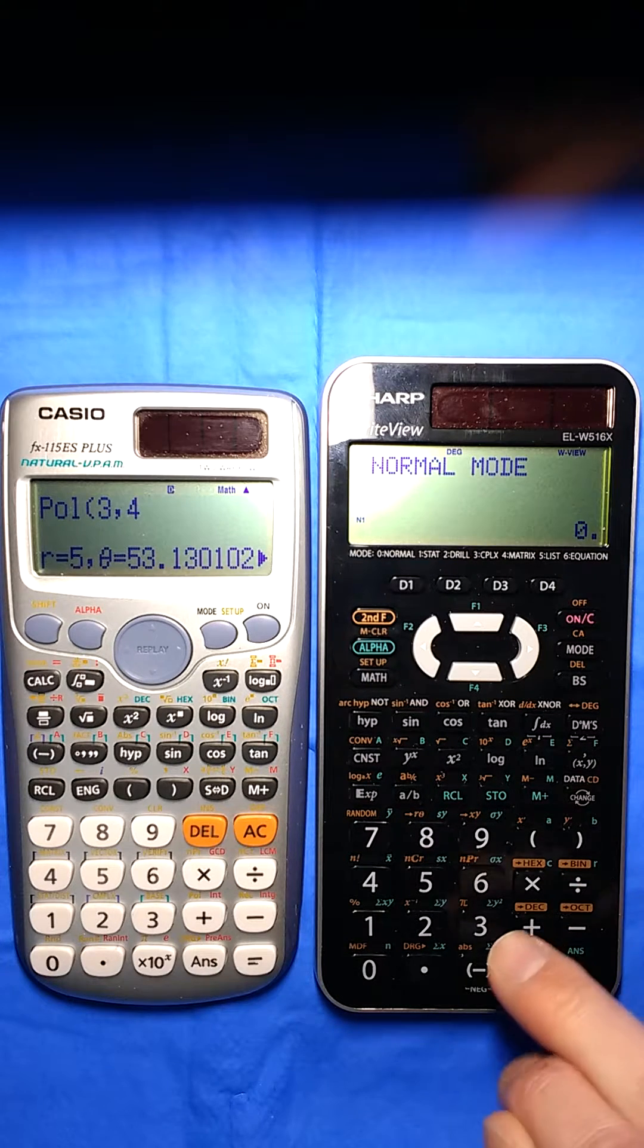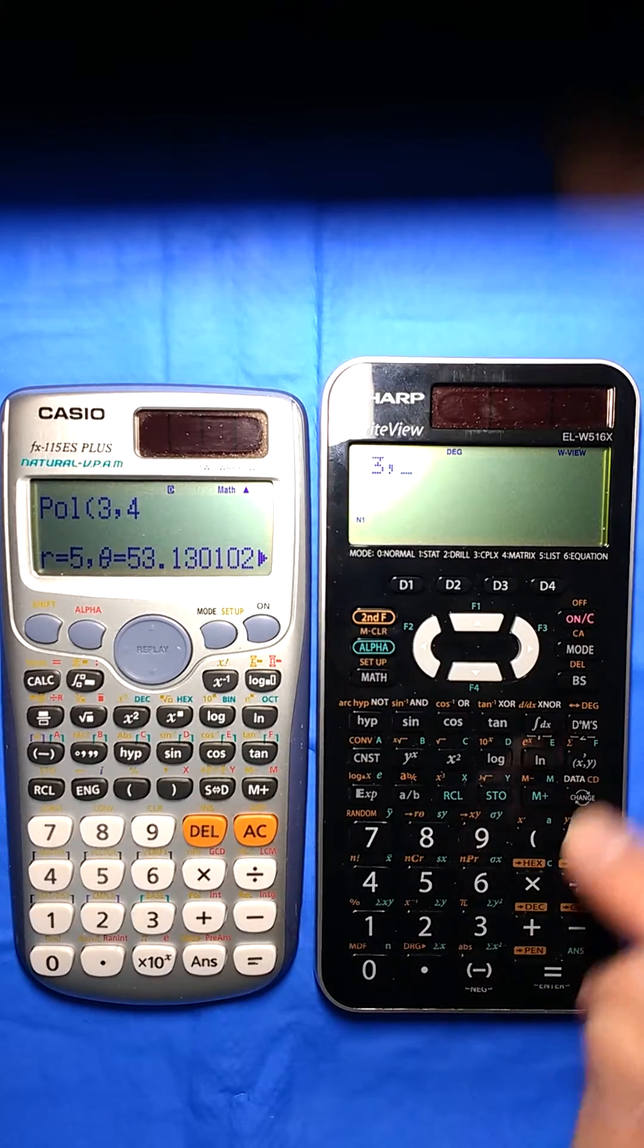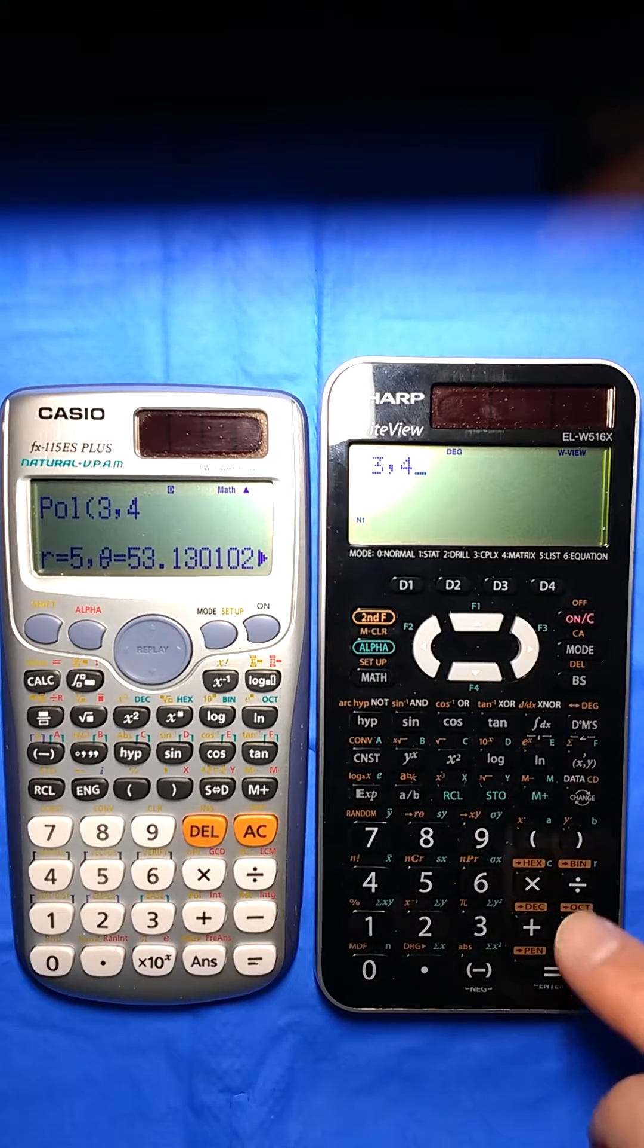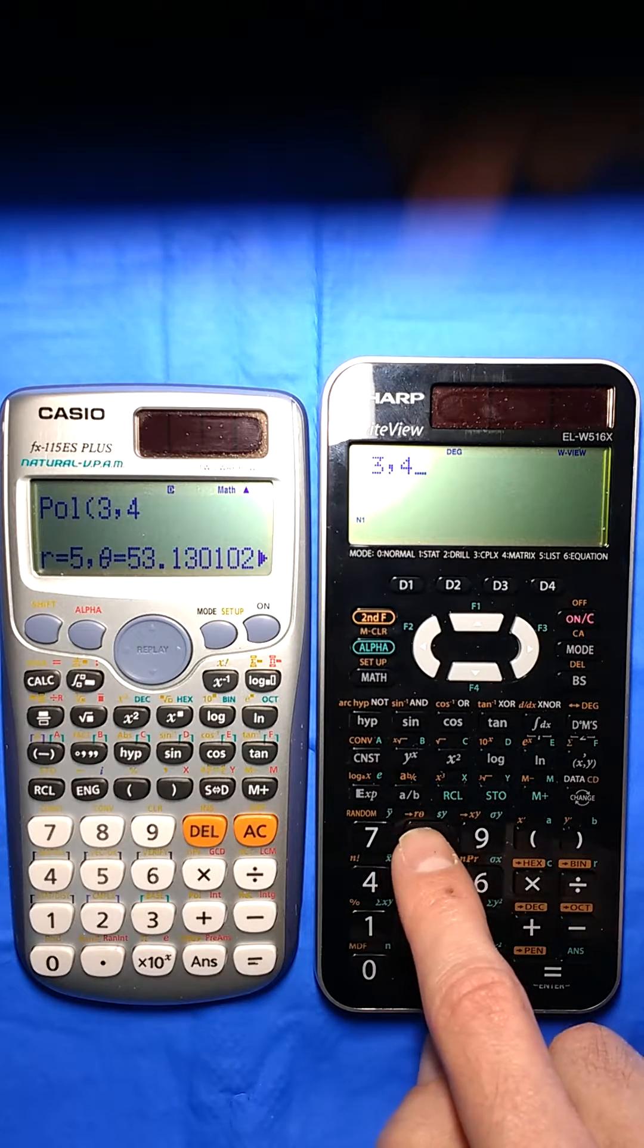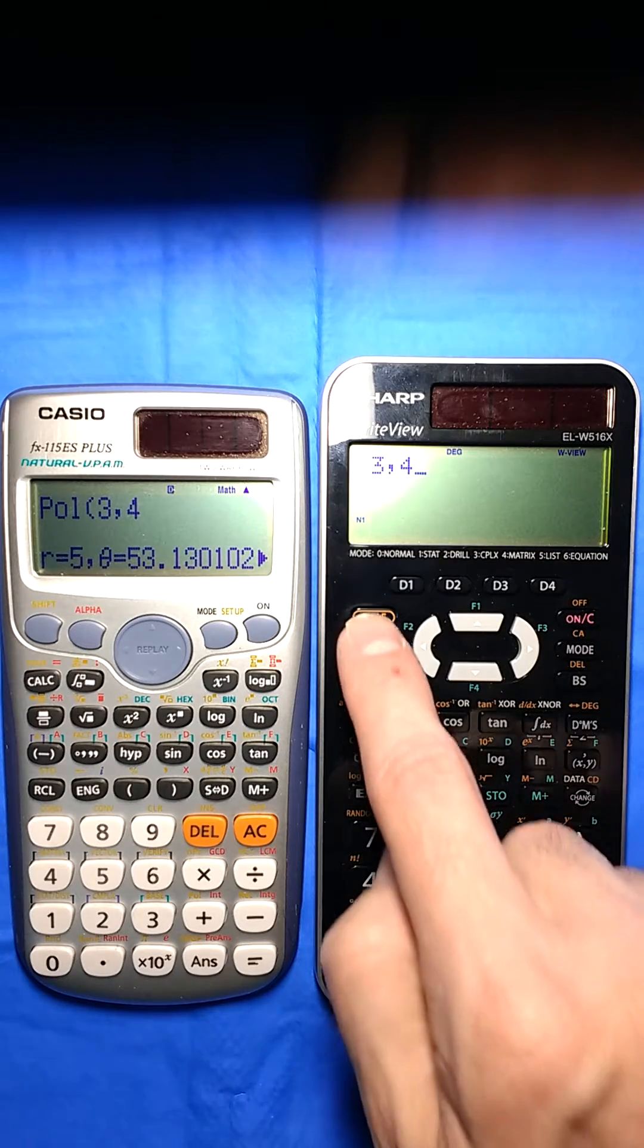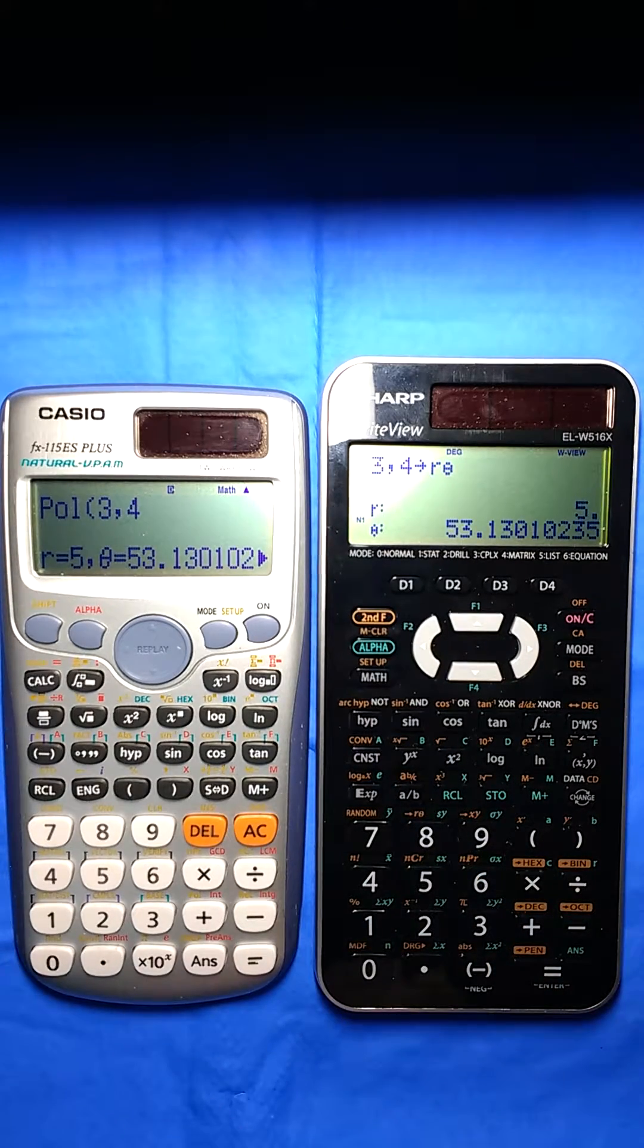On the Sharp you do 3 comma 4, there's no shift or anything. And then it has this arrow pointing to an R theta, so you shift R theta and it gives the answer.